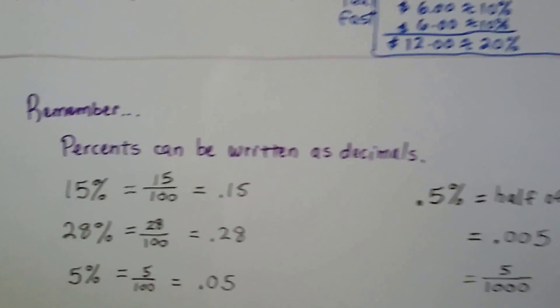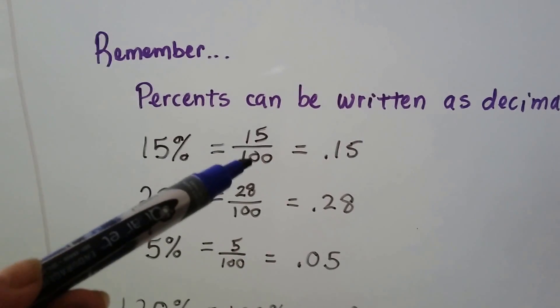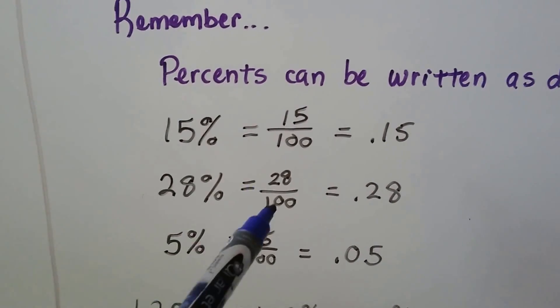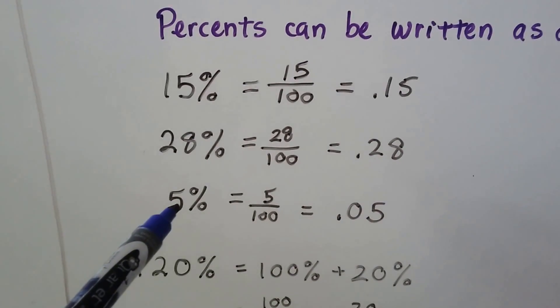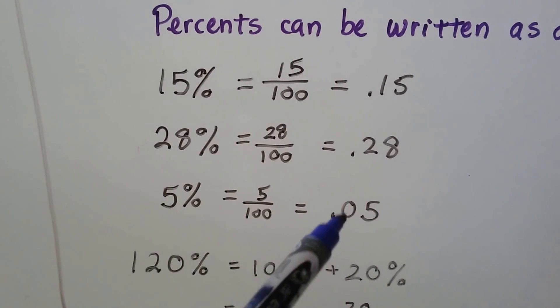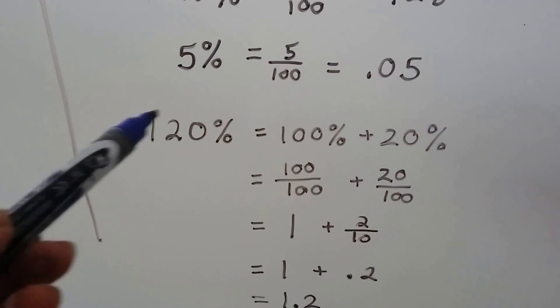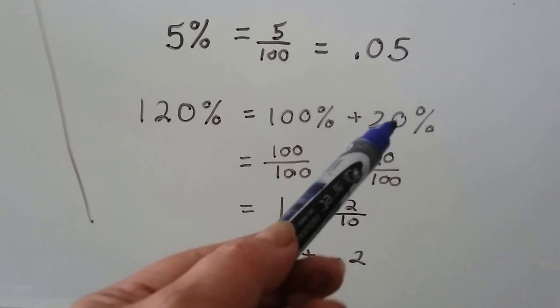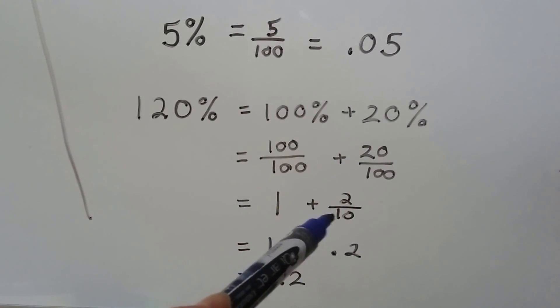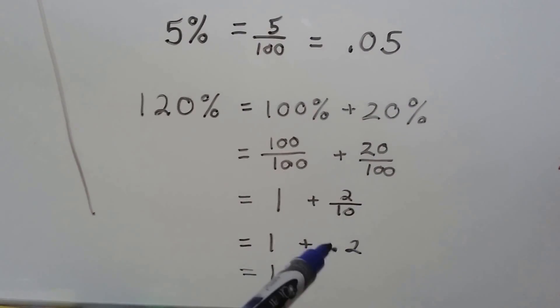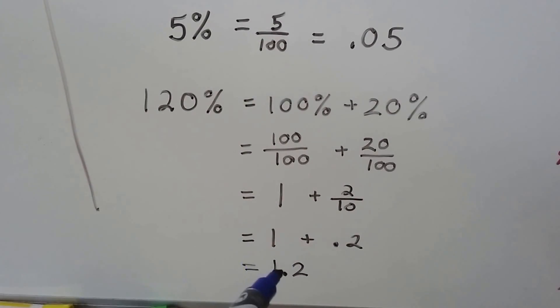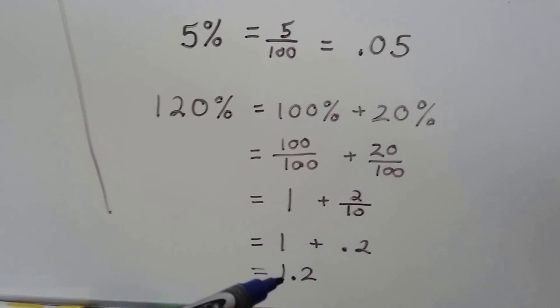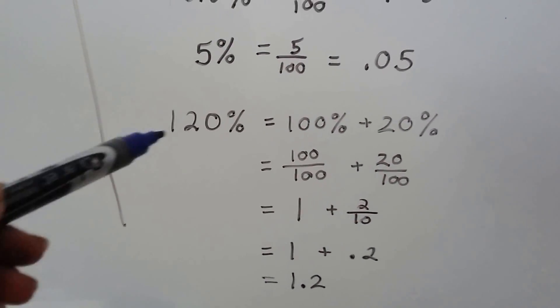So just remember that percents can be written as decimals. 15% is 15 one-hundredths. That's .15. That's 15 one-hundredths as a decimal. 28% is 28 over 100. It's .28. 5%, well that's only 5 parts of 100. That's 5 one-hundredths. That's .05. And if you see a percentage like this where there's three numbers, you know it's 100% plus 20%. And 100% is one whole, isn't it? Plus the 20%, which is .2 or .20. But we can write it as .2. That would be 1.2. And if it said 220%, it would be 2.2. And if it said 320%, it would be 3.2. See? That just means we have a whole number here, okay?